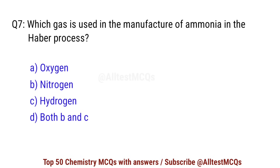Question number 7. Which gas is used in the manufacture of ammonia in the Haber process? Correct option is D: both B and C — nitrogen and hydrogen.